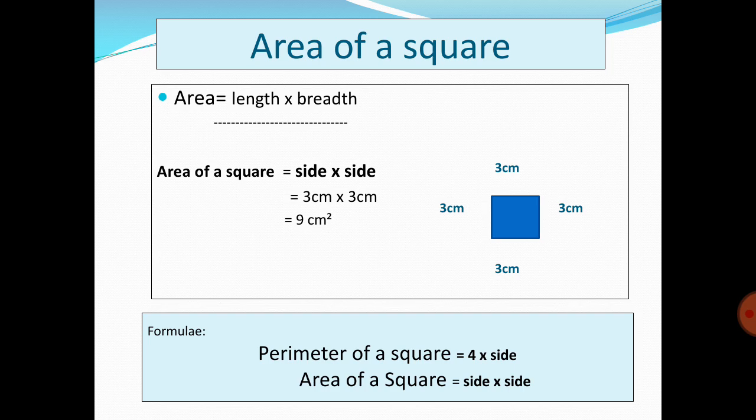Area of a square can be calculated by finding the product of length and breadth. Since a square has equal sides, we simply multiply side × side to get the area: 3 × 3 = 9 centimeter square. One important thing to remember: whenever finding area, it must always be written in square units. Centimeter × centimeter = centimeter square.